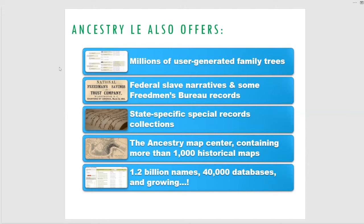There are state-specific special records collections. Unfortunately, Louisiana has some of the strictest privacy laws in the nation, so we don't have a whole lot. But states around us do — Mississippi and Texas have quite a few. You can see if your family crosses into other states as well. The Ancestry Map Center contains more than a thousand historical maps from all over the world — a thousand can go far, but you don't always find a lot that's super useful. Ancestry has over 1.2 billion different names and 40,000 different databases, and it's still growing.